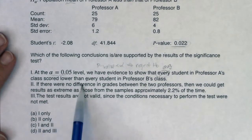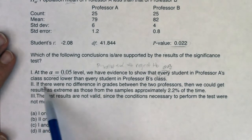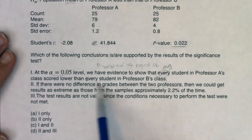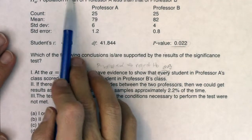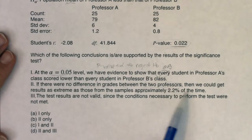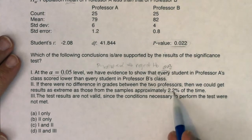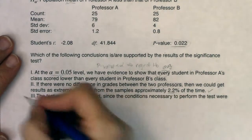Okay all right so then let's see what else we got. It says if there were no difference in grades between the two professors. So right here this sentence is saying if the null was true right there was no difference because that's what we're saying these two means are equal. So if the null is true then we could get results as extreme as those from the samples approximately 2.2% of the time. Well that interpretation is the p-value. That's exactly what the p-value says. If the null is true you get the data you saw just by chance. And what was our p-value?